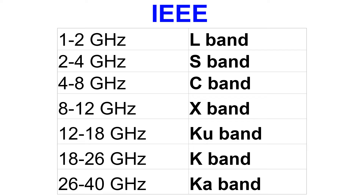C band is from 4 to 8 GHz according to the Institute of Electrical and Electronics Engineers (IEEE) standards. The Wi-Fi band of 5 GHz falls within the IEEE C band. Ku band according to IEEE is from 12 to 18 GHz.